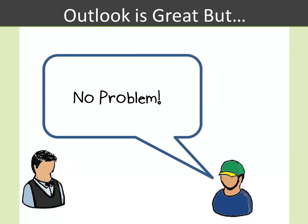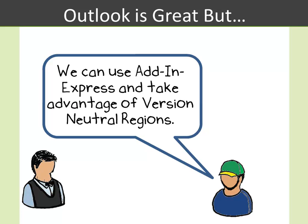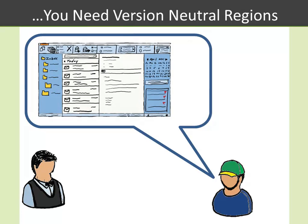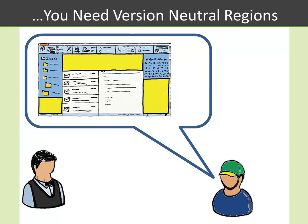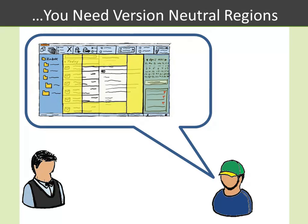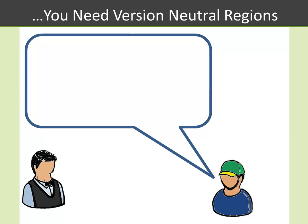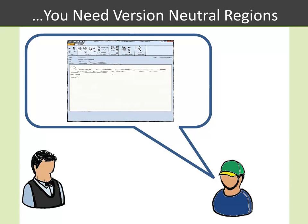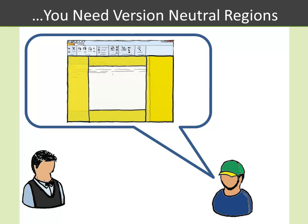Developers can extend Outlook's user interface by implementing something known as version-neutral regions. Addin Express version-neutral regions, or simply Addin Express regions, are advanced view and form regions that reside within Outlook. They allow developers to display their custom .NET forms in the Outlook Explorer window via advanced views, and the same is true with Outlook Inspector windows, where you can display them within the Inspector window.